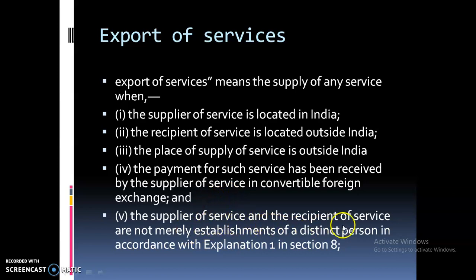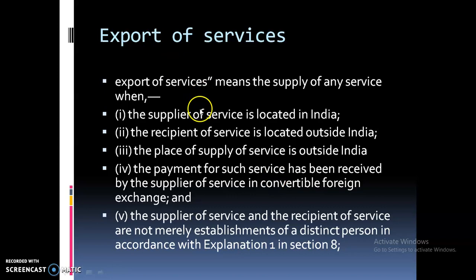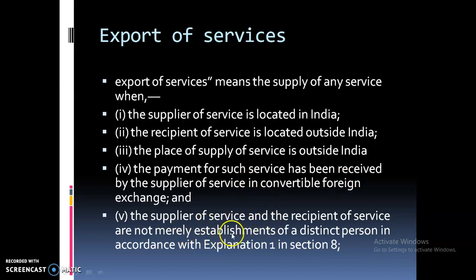When the supplier of service and recipient of service are known, mainly the establishment of a distinct person in accordance with Explanation 1 to Section 8 — export of service means supplier in India, recipient located outside India, place of supply outside India, payment in convertible foreign exchange. Supplier and recipient should not be a distinct person or establishment of a distinct person as defined under Explanation 1 to Section 8.